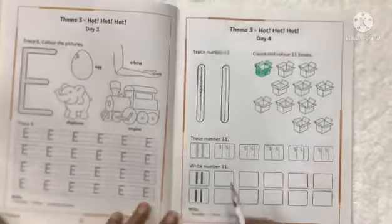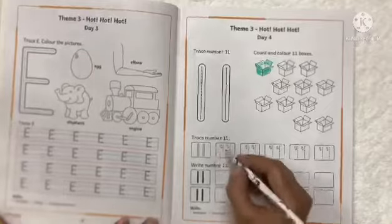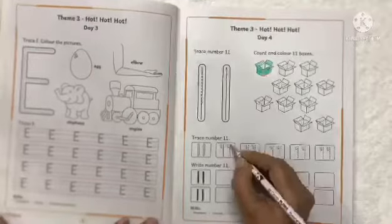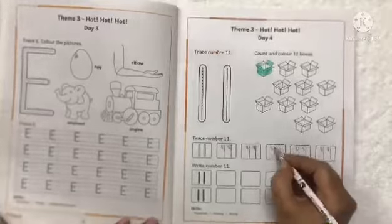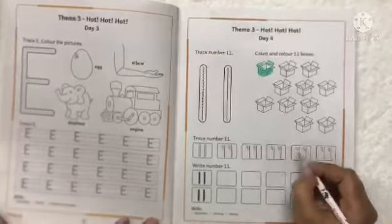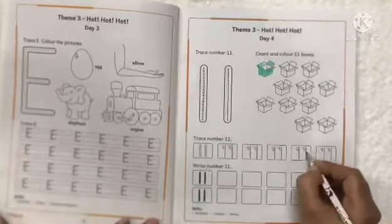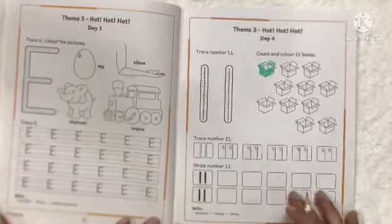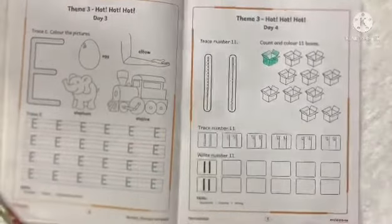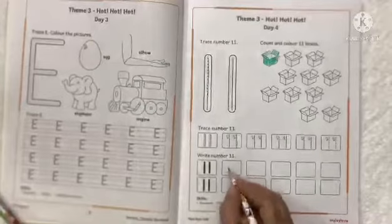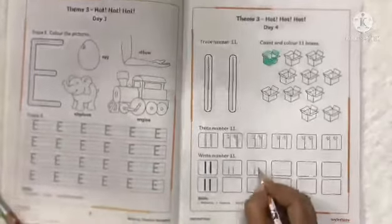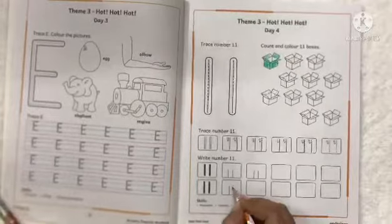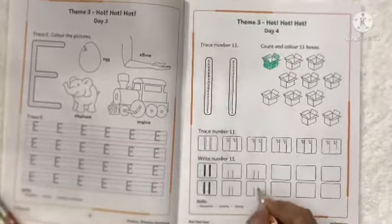Then again we have to trace number 11. 1, 1, 11. Like this. We will write in all the boxes touching the bottom line. Now, again in these boxes we will write number 11. Like this. 11, 11, 11.